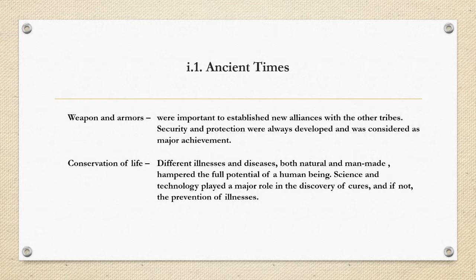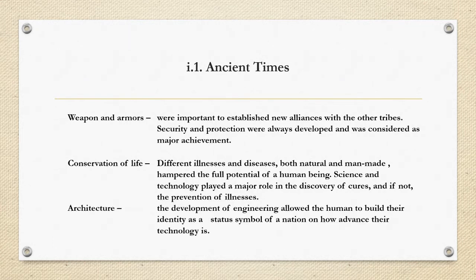Security and protection were always developed and considered a major achievement. Conservation of life was also key — different illnesses and diseases, both natural and man-made, hampered the full potential of human beings, so science and technology played a major role in the discovery of cures and prevention of illness. Architecture allowed humans to build their identity as a status symbol of the nation, while aesthetics defined the beauty of how their structures were made.